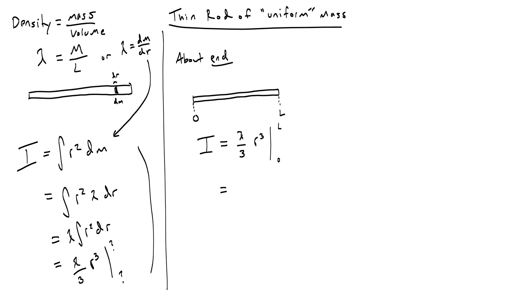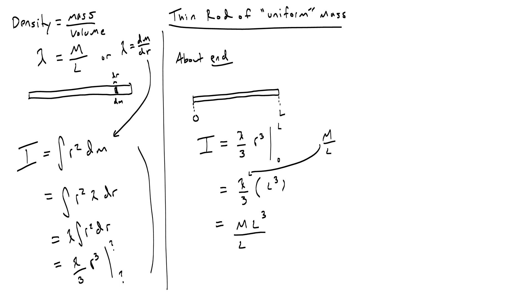Evaluating from 0 to L gives lambda over 3 times L cubed minus 0. Plugging in M over L for lambda gives ML cubed over 3L. One L cancels, and you get ML squared over 3, which you can write as one-third ML squared.